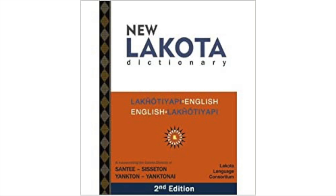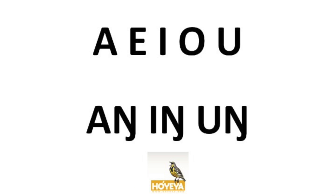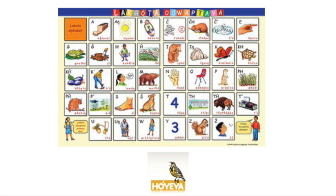Using the Lakota Language Consortium, or LLC, orthography, these vowels and every other letter found in the Lakota alphabet are consistent with reading and writing and listening and speaking. Every sound in the Lakota language is represented by one letter, and each letter is represented by one sound.